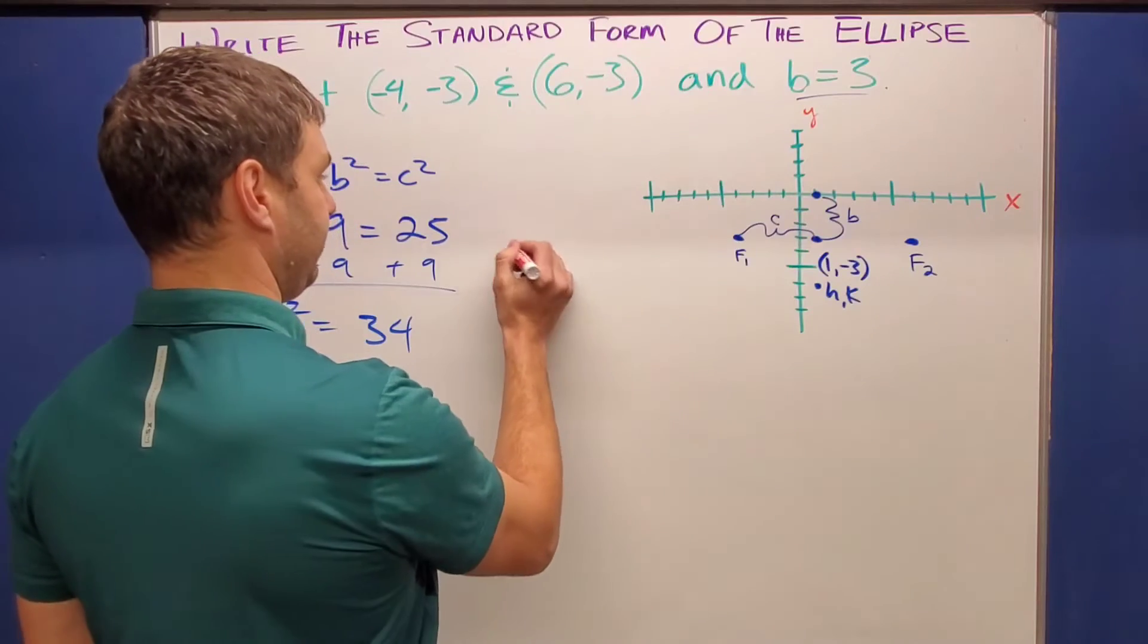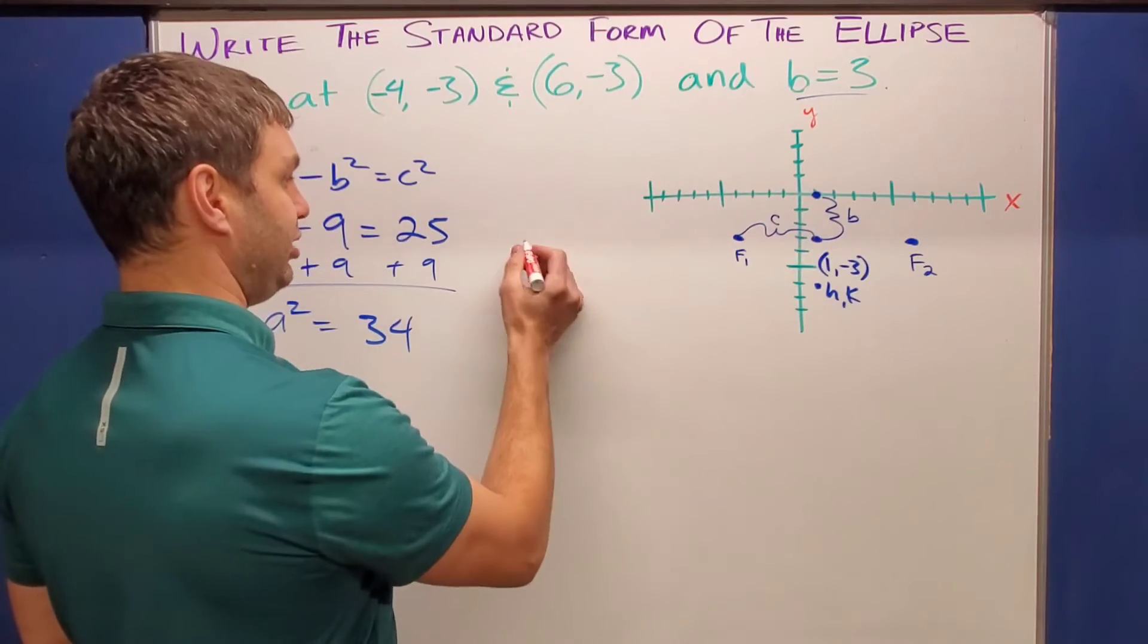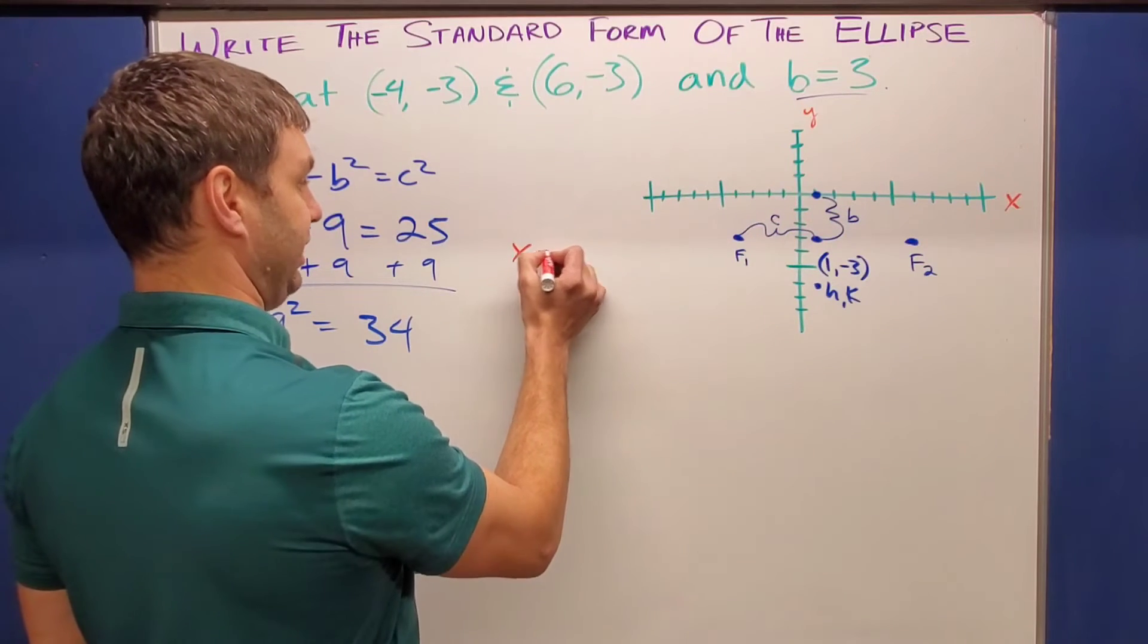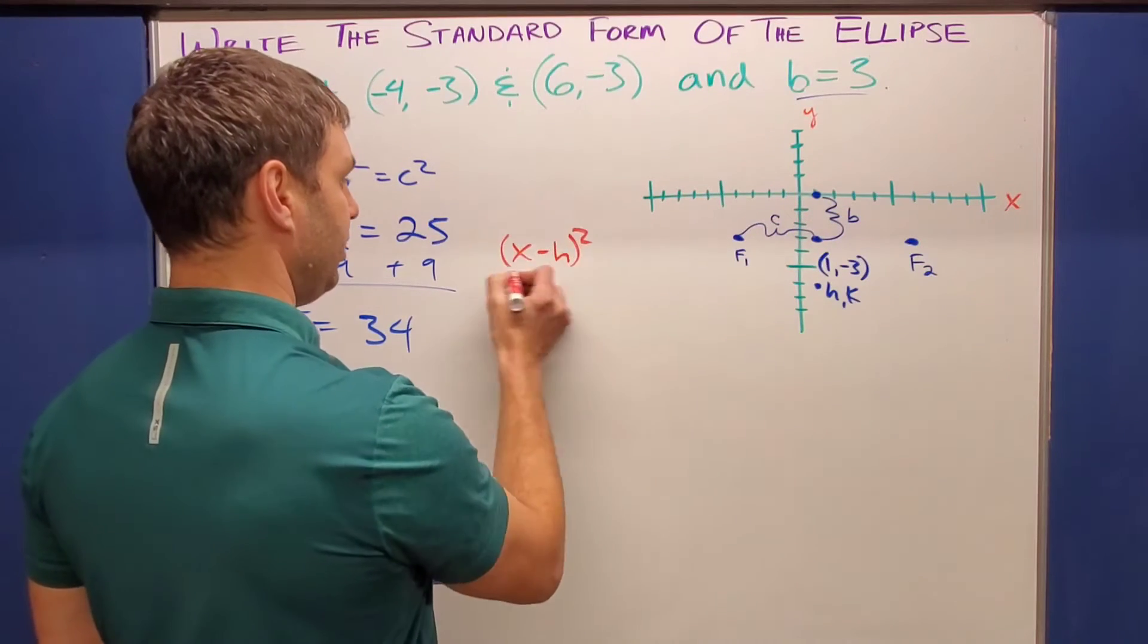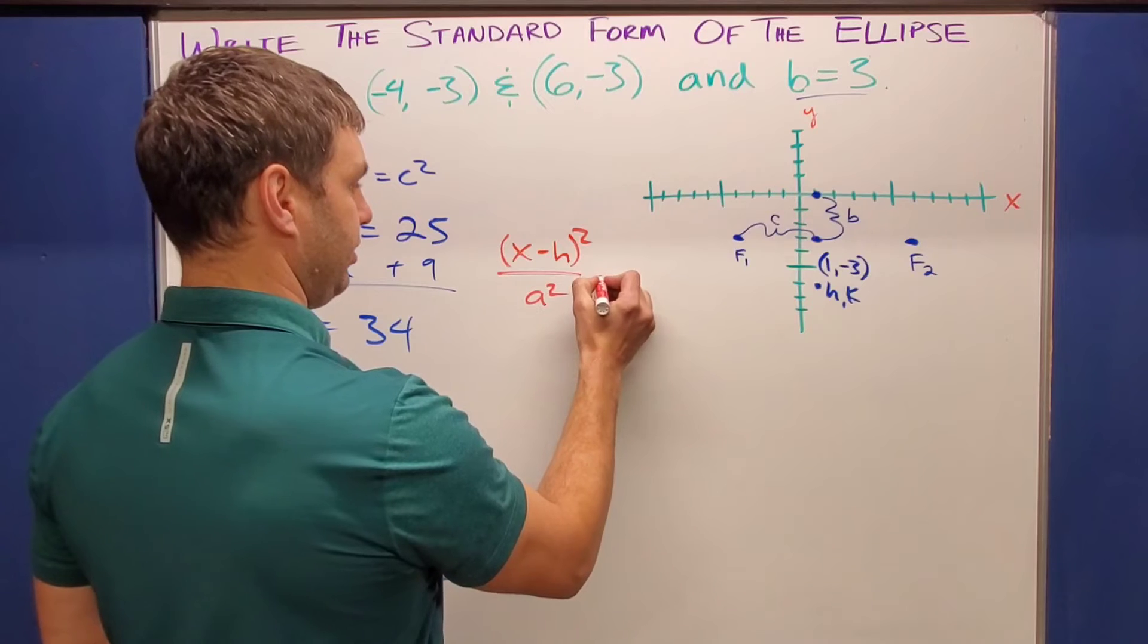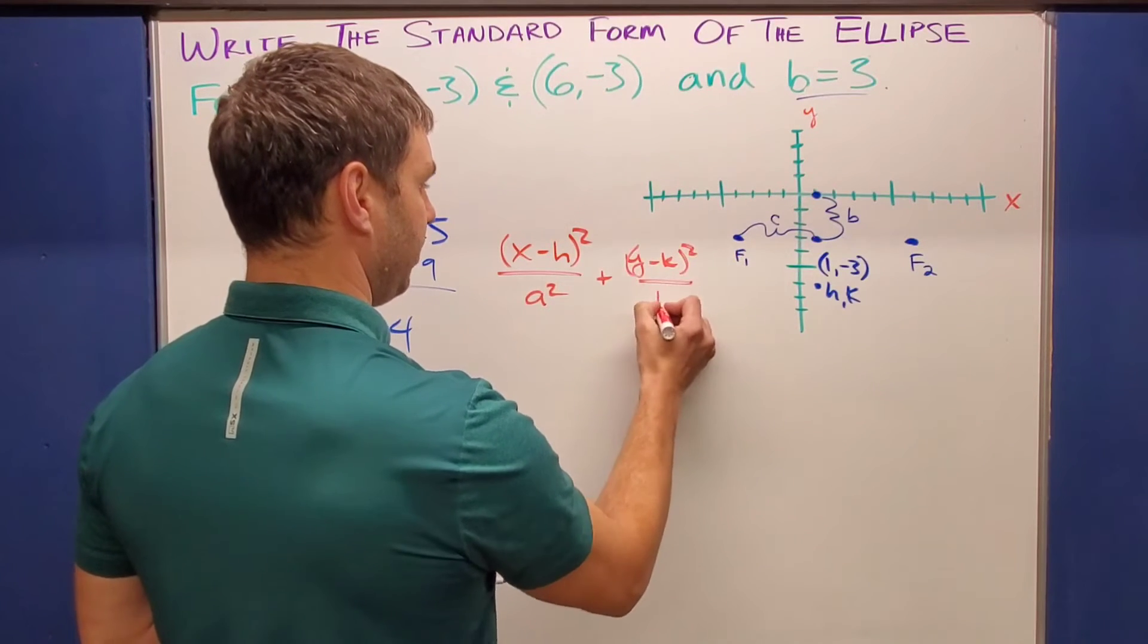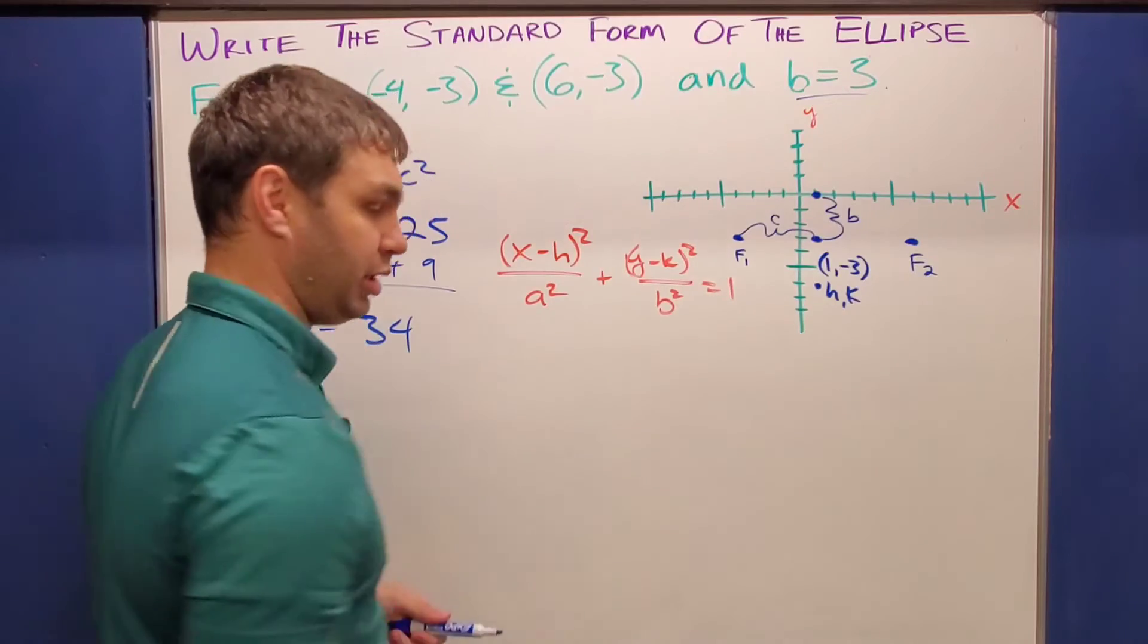So for example, this is what the standard form looks like before I put any of the information in, and it's of course oriented in the X direction. So it'd be X minus H quantity squared over A squared plus Y minus K quantity squared over B squared. And that equals one.